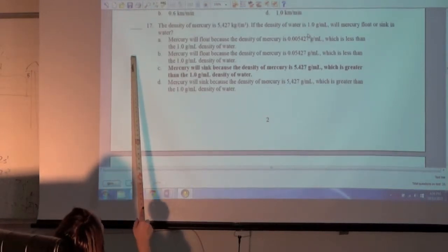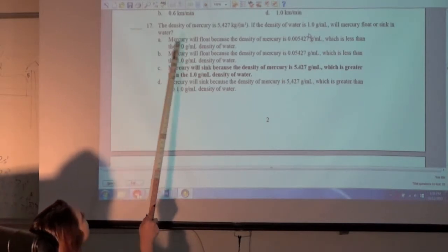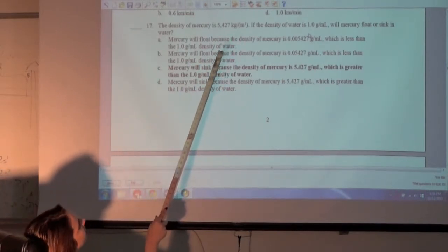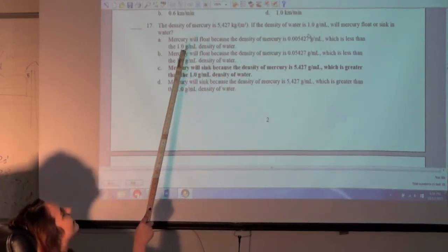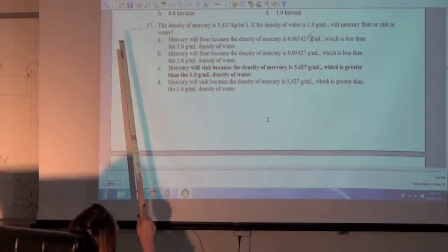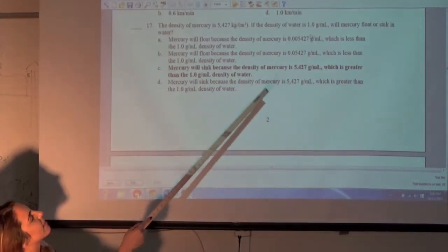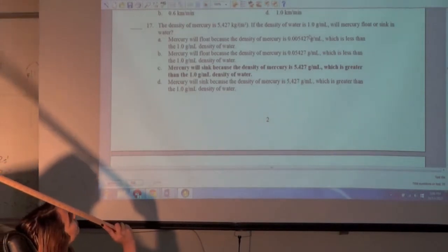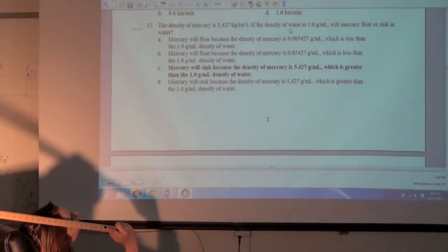What density of mercury is 5.427 kilometers? If the density of water is one point, that's kilograms per meter cubed. Okay. You've got to have it for a mass or a volume. Mass over volume always for density. Okay.